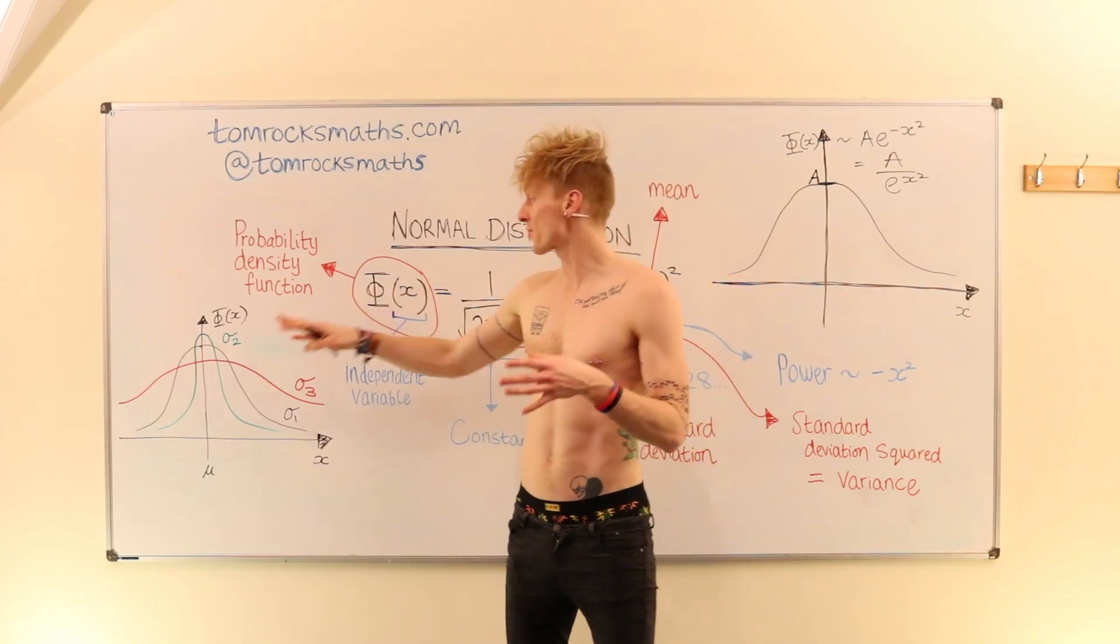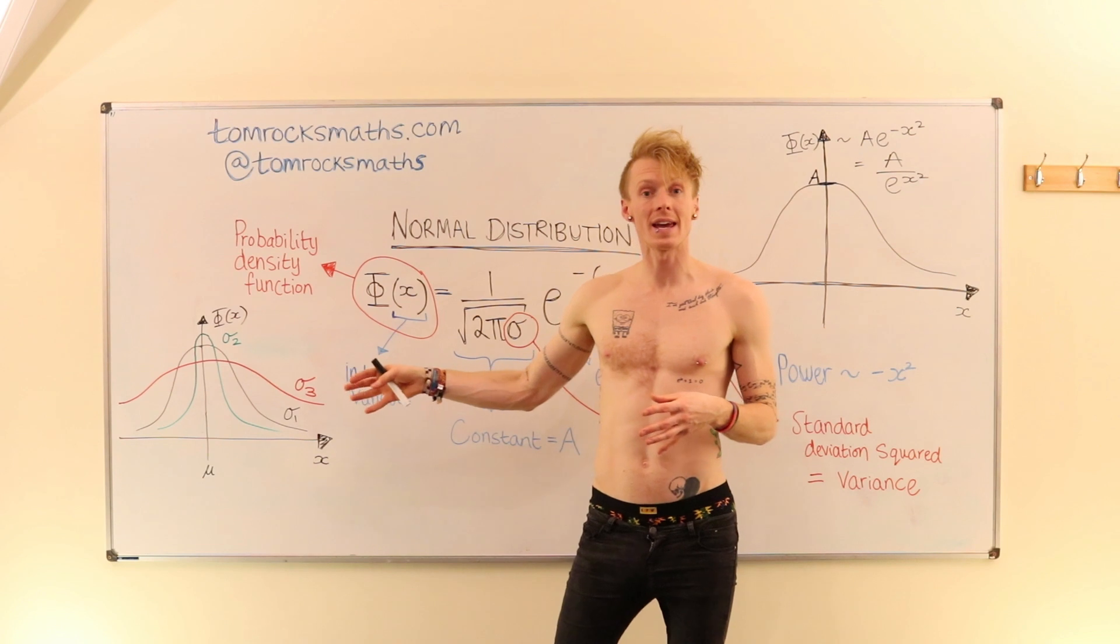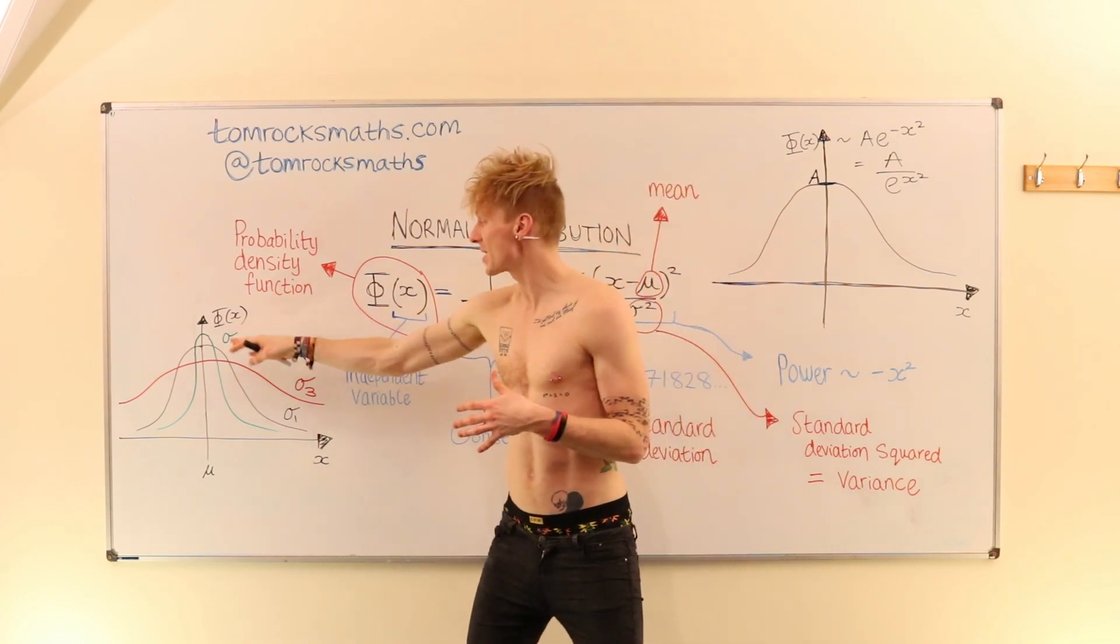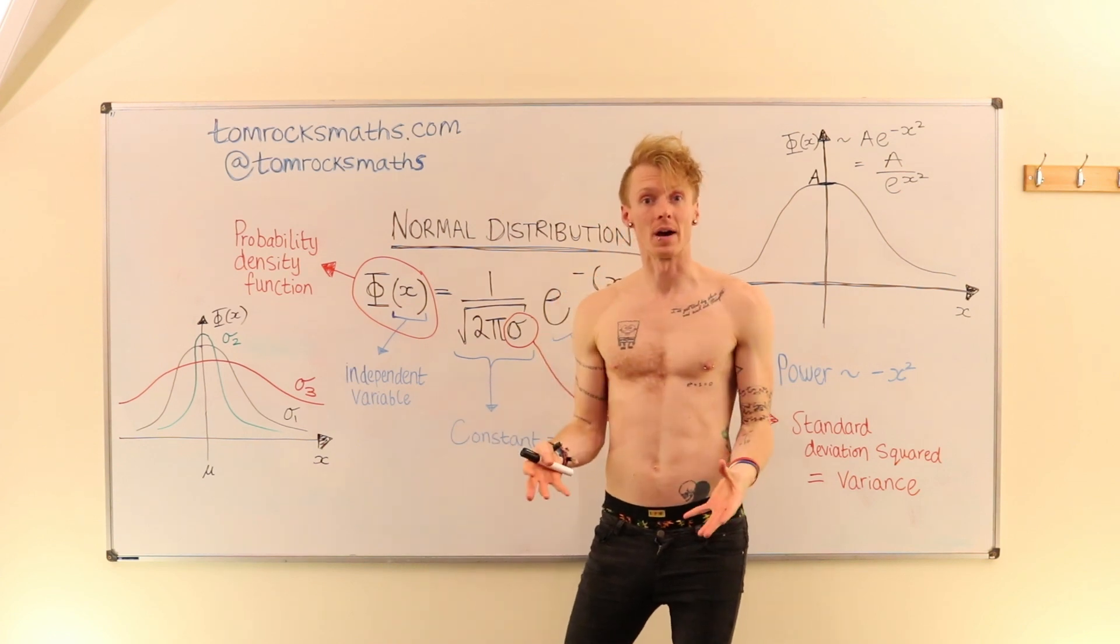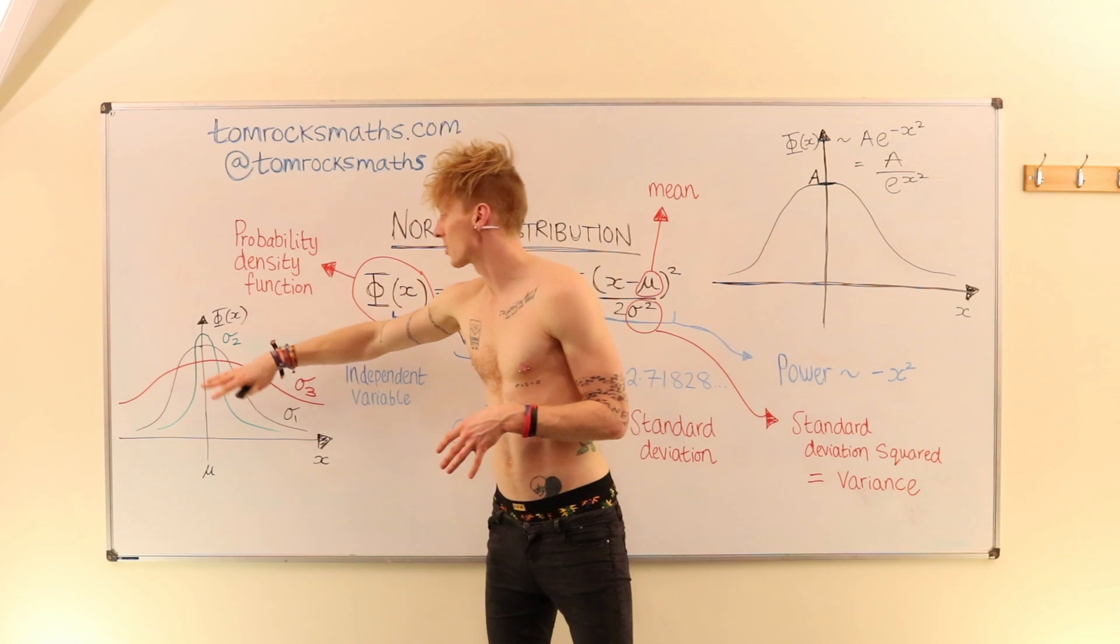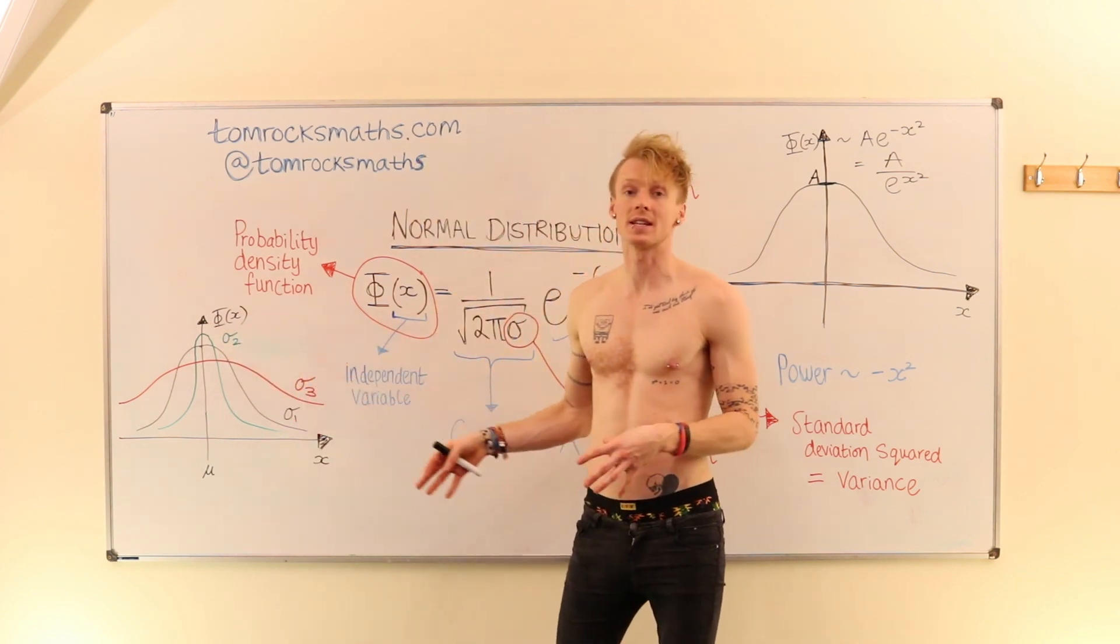So I've drawn three bell-shaped curves over here. They are all examples of a normal distribution. And we have three different values of sigma. For the black curve, we have sigma 1. For the green curve, sigma 2. And for the red curve, sigma 3.